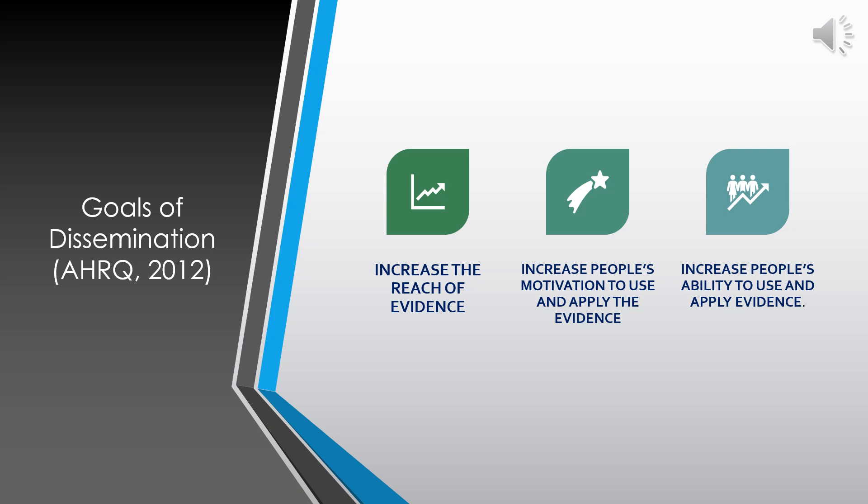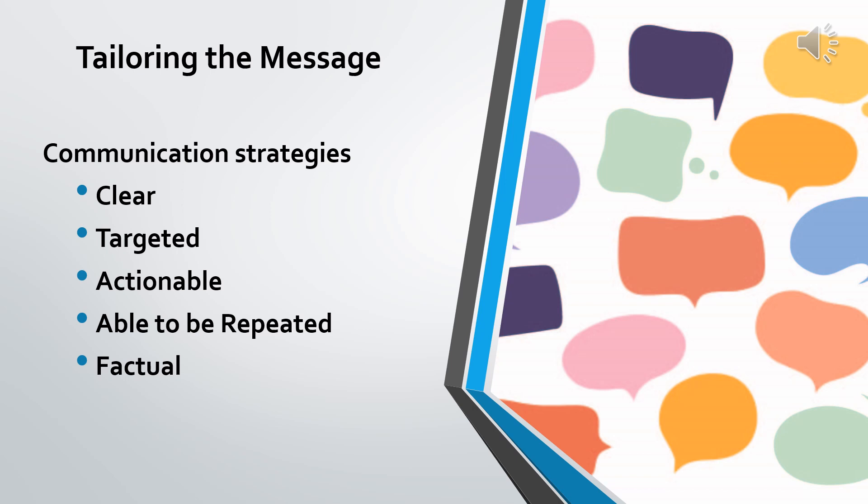According to the Agency for Healthcare Research and Quality, evidence dissemination has several broad goals: to increase the reach of evidence and get it into the hands of public health professionals; to increase people's motivation to use and apply evidence and explain why it is important for communities; and to increase people's ability to apply evidence by overcoming barriers in community and clinical settings.